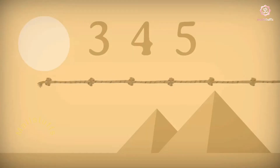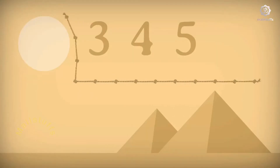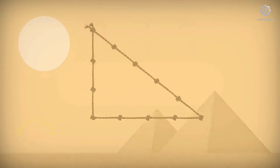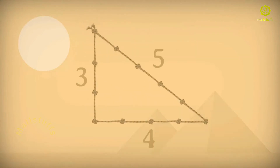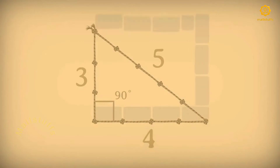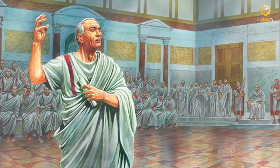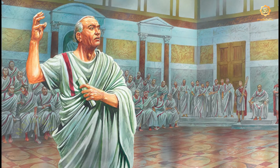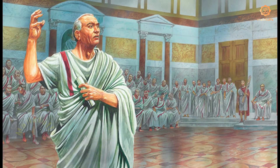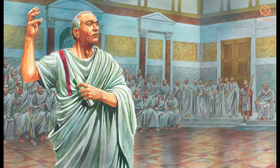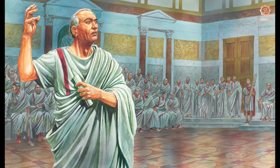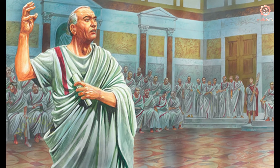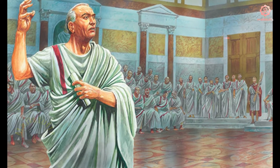Both Apasthamba and Bodhayana provided the proof of Pythagoras theorem. But unfortunately, this vital contribution was deliberately ignored and only Pythagoras was wrongly credited by Cicero and other Greek mathematicians for this theorem.